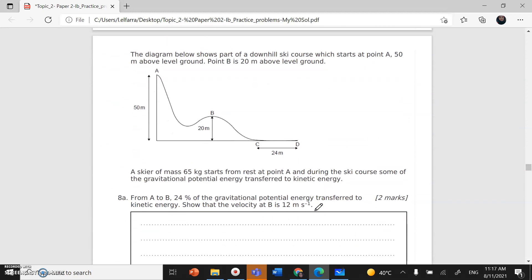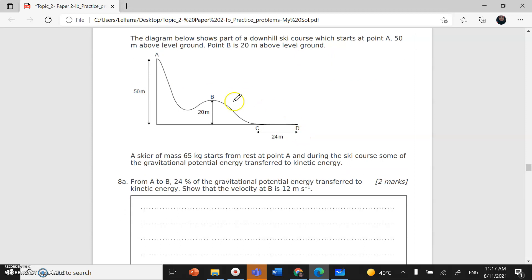We still have time. We can start with question number 8. Here you have part of a downhill ski course. It starts at point A, the height is 50 meters above the ground. At point B it's 20 meters above level ground. We have a skier, mass 65 kilogram, starts from rest at point A. From A till B, 24% of the gravitational potential energy is transferred to kinetic energy. Show that the velocity at B equals 12 meter per second. Since it's talking about energy, we can use conservation of energy. Initial energy at A equals final energy at B. Initial energy is only gravitational potential energy. At B it's kinetic energy plus gravitational potential energy. So MGH1 equals half MV squared plus MGH2. I can take these together and cancel the mass. So G times delta H equals half V squared. V will be square root of 2G times delta H, which gives square root of 2 times 10 times (50 minus 20), which equals 11.9 meter per second, rounded to 12 meter per second.